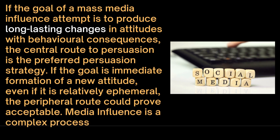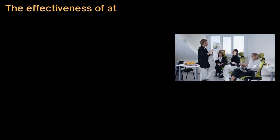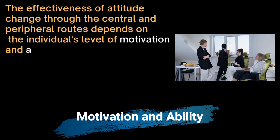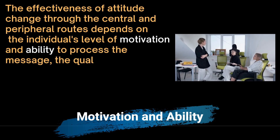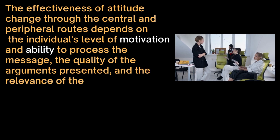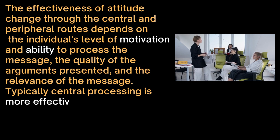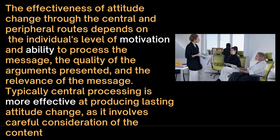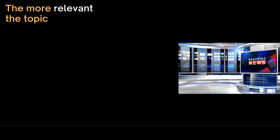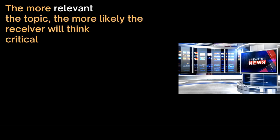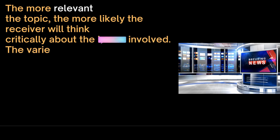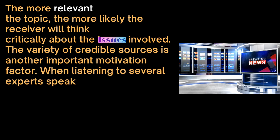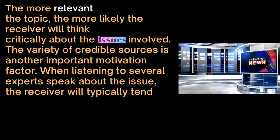Media influence is hence a complex process. The effectiveness of attitude change through the central and peripheral routes depends on the individual's level of motivation and ability to process the message, the quality of the arguments presented, and the relevance of the message. Typically, central processing is more effective at producing lasting attitude changes as it involves careful consideration of the content. The more relevant the topic, the more likely the receiver will think critically about issues involved. The variety of credible sources is another important motivation factor. When listening to several experts speak about the issue, the receiver will typically tend to centrally process the content.